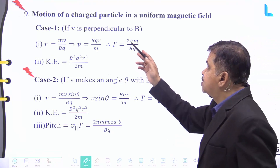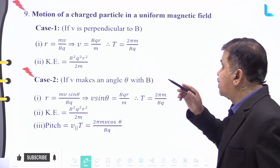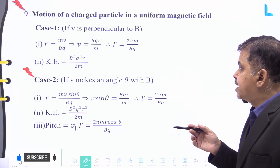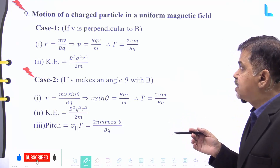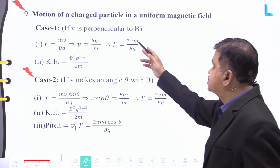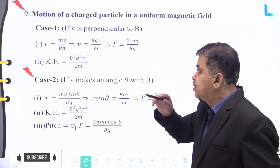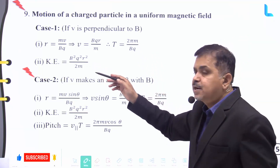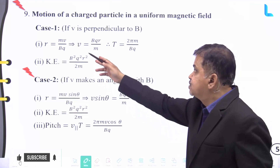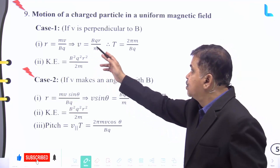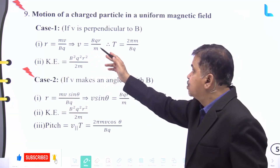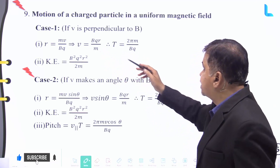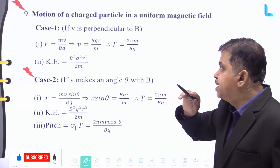For the motion of a charged particle in a uniform magnetic field, we have two cases. Case one: if v is perpendicular to B, then r equals mv divided by Bq. This implies v equals Bqr divided by m. Therefore, time period T equals two pi m divided by B times q.